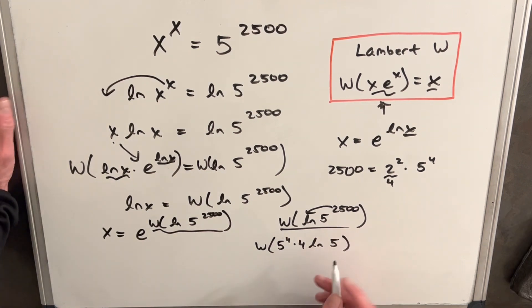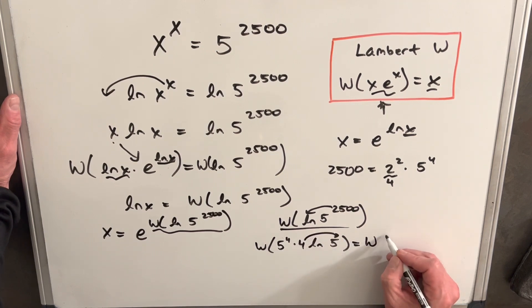And then when you look at it this way, you notice we can actually just by the logarithm rules, we could bring this back as the exponent. And so we can rewrite this as Lambert W of 5 to the 4th ln 5 to the 4th.